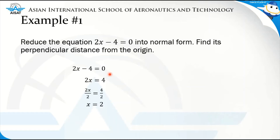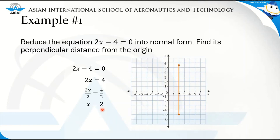If we graph this equation x equals 2 on our Cartesian plane, we get a vertical line. The distance of the line from the origin can be easily determined — it is 2 units, which is also represented directly by our equation x is equal to 2.